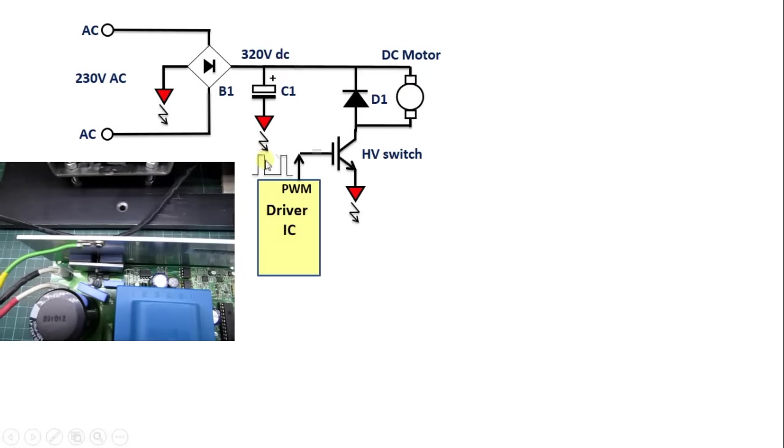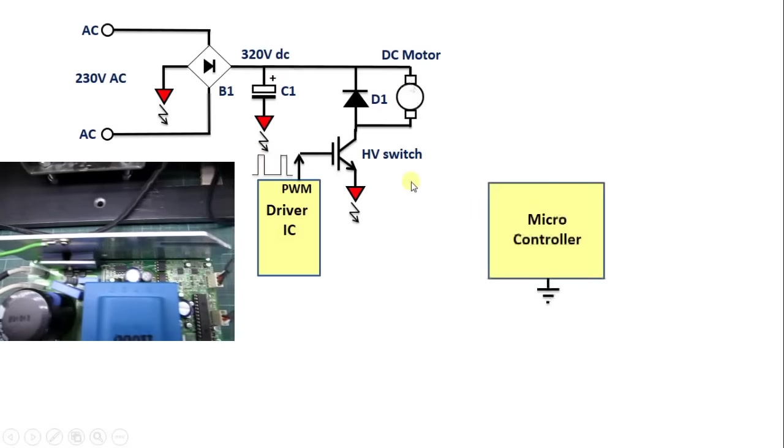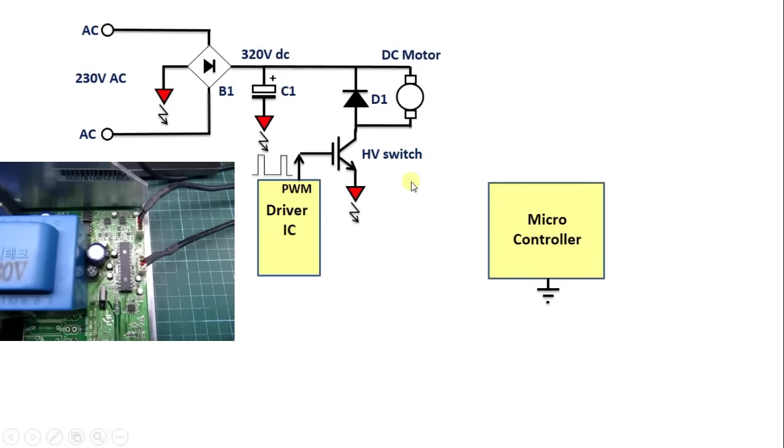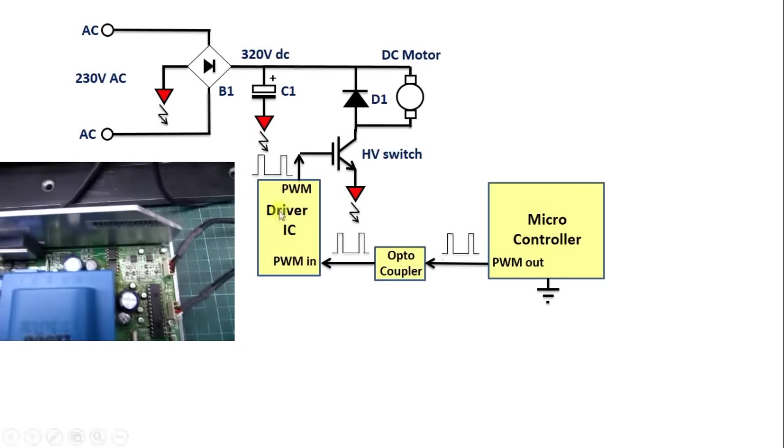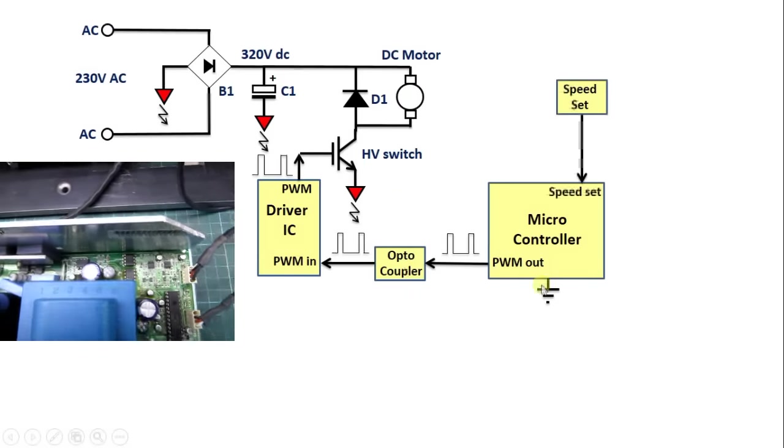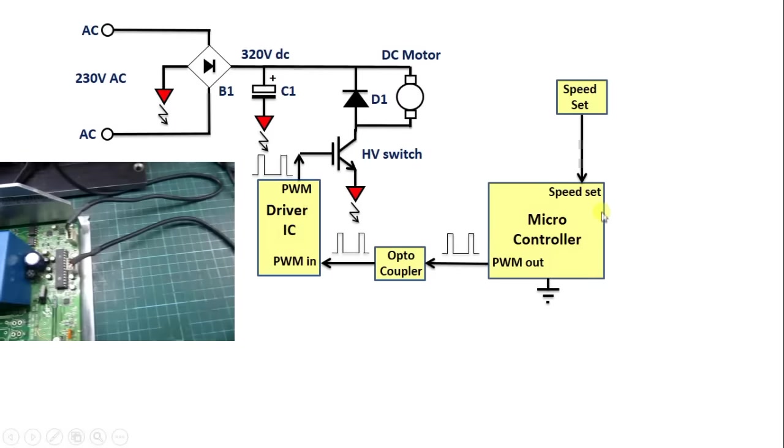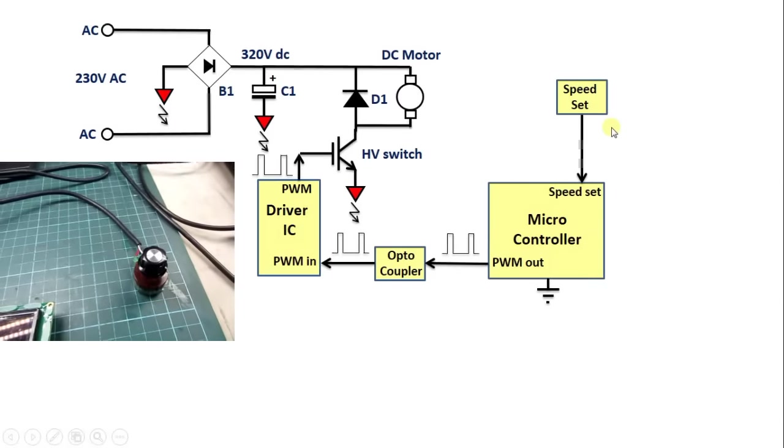The longer the switch is on, the higher the motor voltage and the faster the motor will spin. On the secondary side is a microcontroller that generates the PWM signal and sends it to the driver IC via an optocoupler that provides isolation. The microcontroller has a speed set input for the manual setting of the motor speed via a potentiometer.